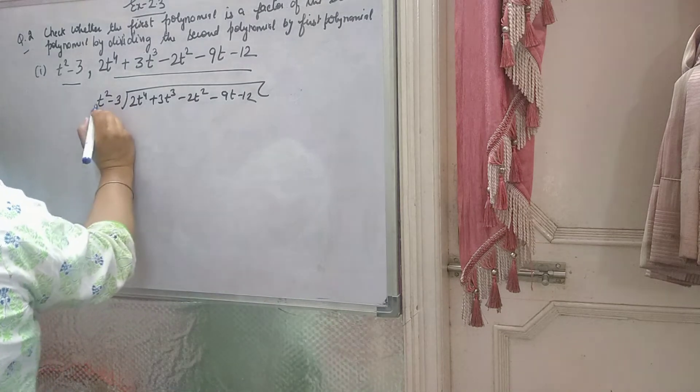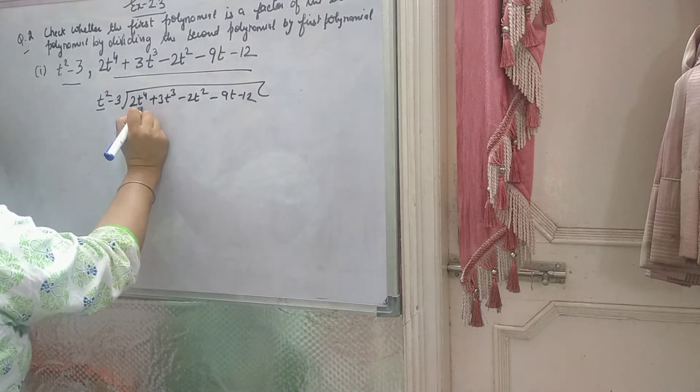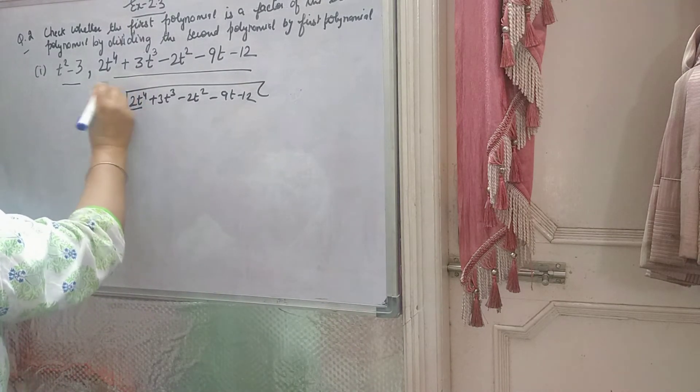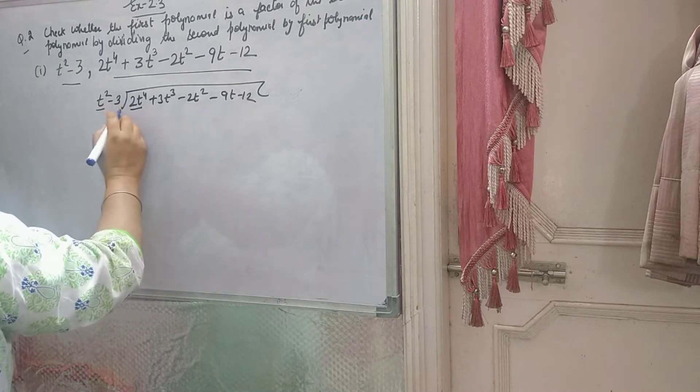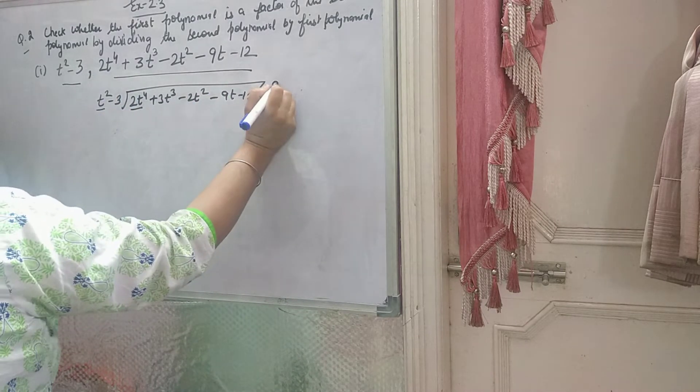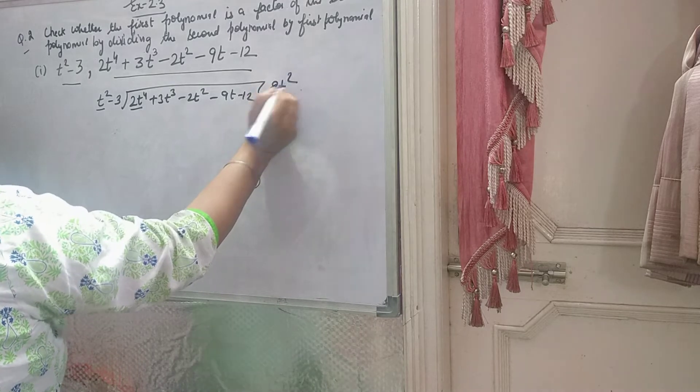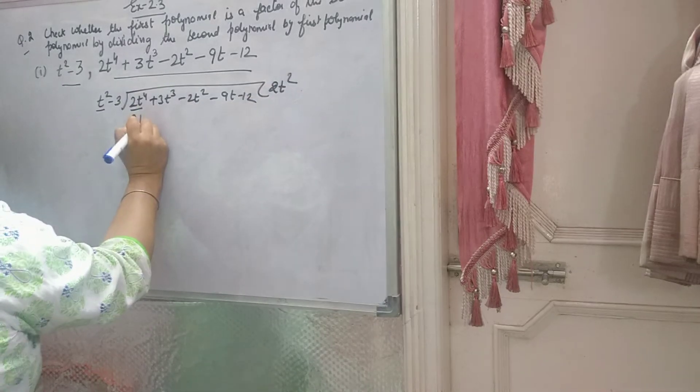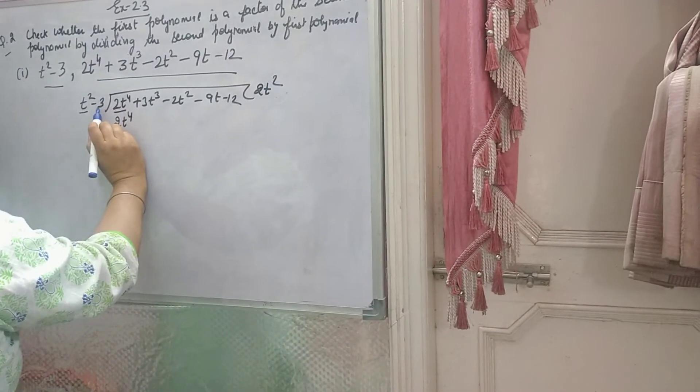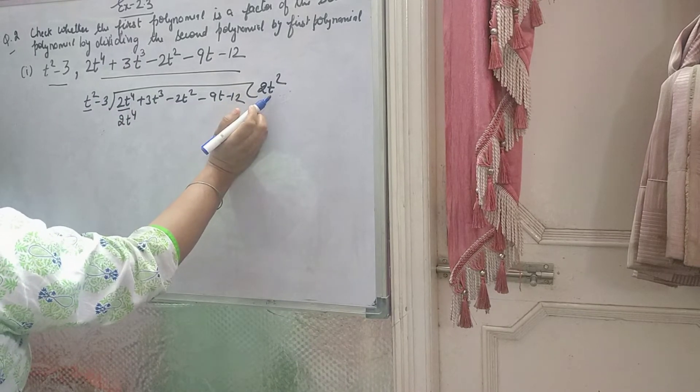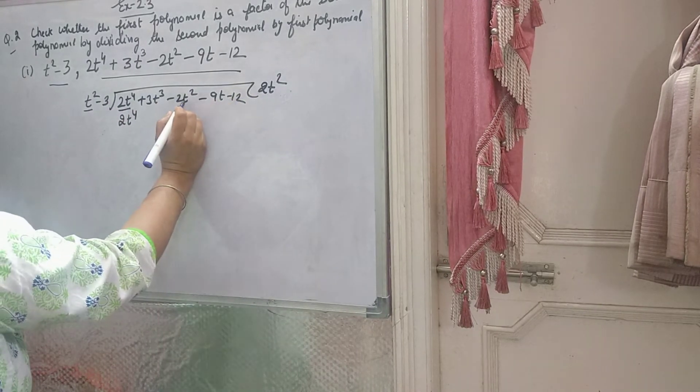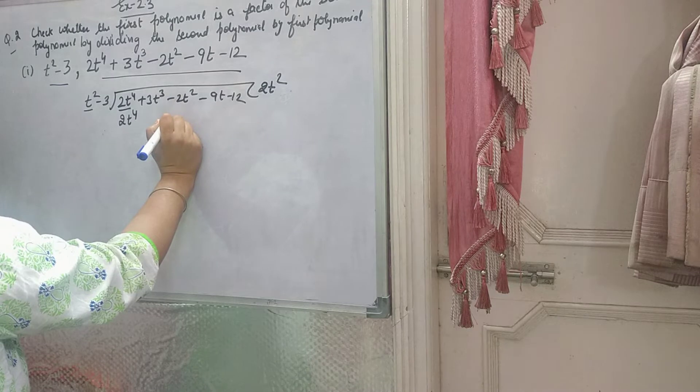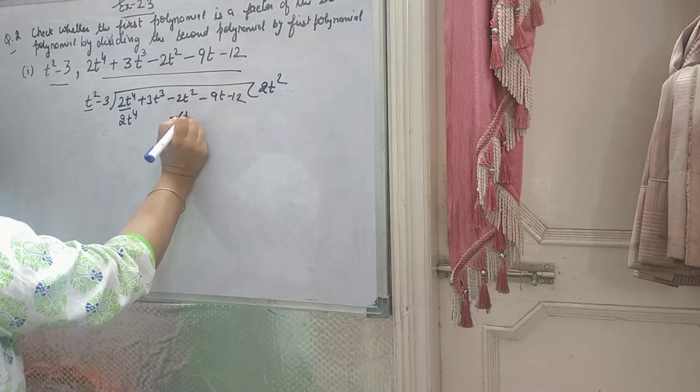Now here t² is in the divisor and you want 2t⁴. So always you are seeing the first term. Now you will multiply t² by 2t², therefore you will get 2t⁴. So 2t² multiplied will give 2t⁴. Now minus 3 multiplied by 2t² gives minus 6t². You write t² below t². So it will be minus 6t².